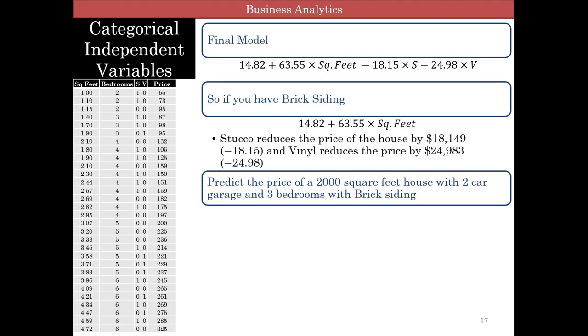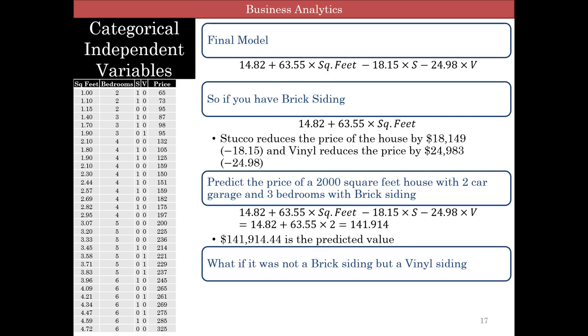So if you want to predict the price of a 2,000 square feet house with two-car garage and three-bedrooms and brick siding, first you've got to kind of look at the data and make sure that 2,000 falls here. And we do have data which is about 2,000 square feet. We have data which has two-car garages and three-bedrooms. So we can run the model. And remember, S and V will be zero, which will give us 141,914. But if it has a vinyl siding, you're going to reduce about 24.98 from this value, which will give you 116,931. And of course, you should be able to create confidence prediction intervals for these and also change the predicted value if it is Stucco. And with this, we finish regression with categorical variables.